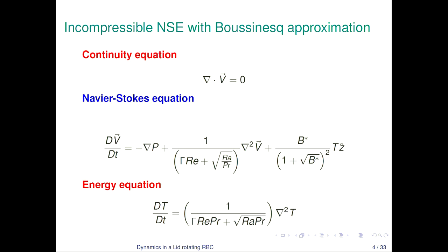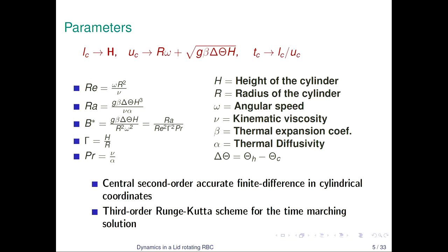To introduce the equations, we have the continuity, Navier-Stokes, and energy equations. One key difference is that we use a characteristic velocity because here the velocity is imparted both by the rotation of the lid as well as the free fall velocity due to thermal convection. The characteristic velocity has both the rotation R-omega part as well as the free fall velocity due to thermal convection.